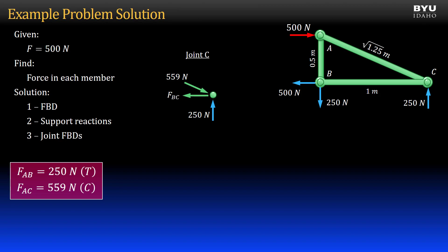Now I see that there is only one unknown force, and I can solve for it by summing forces in the x-direction. I get that force BC is positive 625 Newtons, so it is in tension.